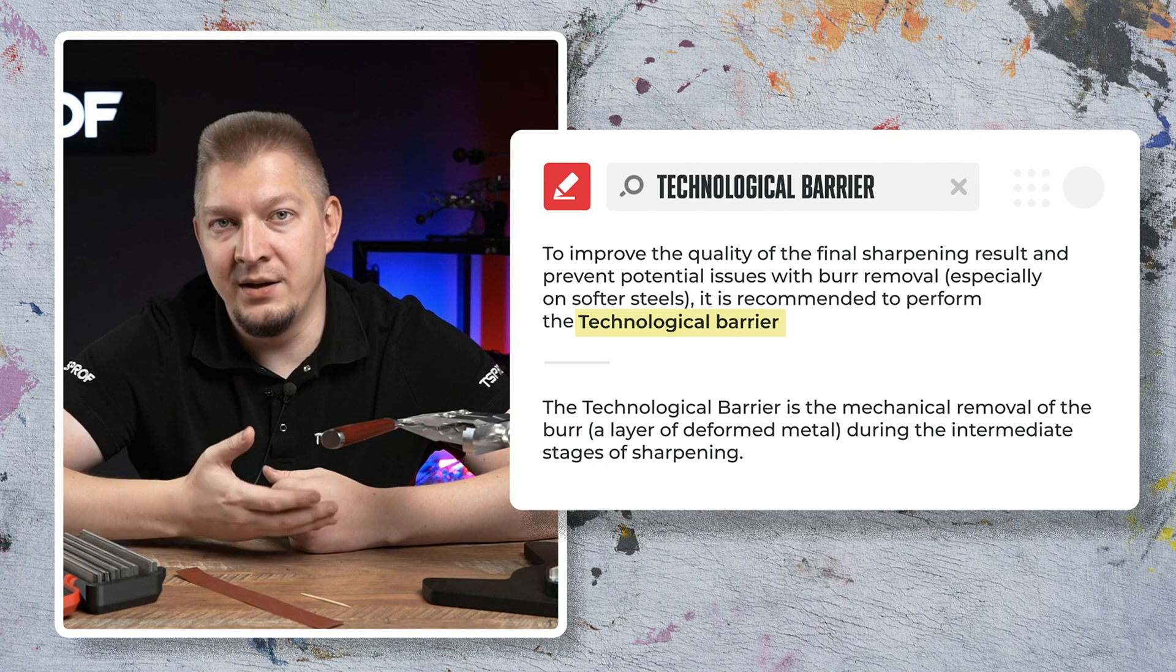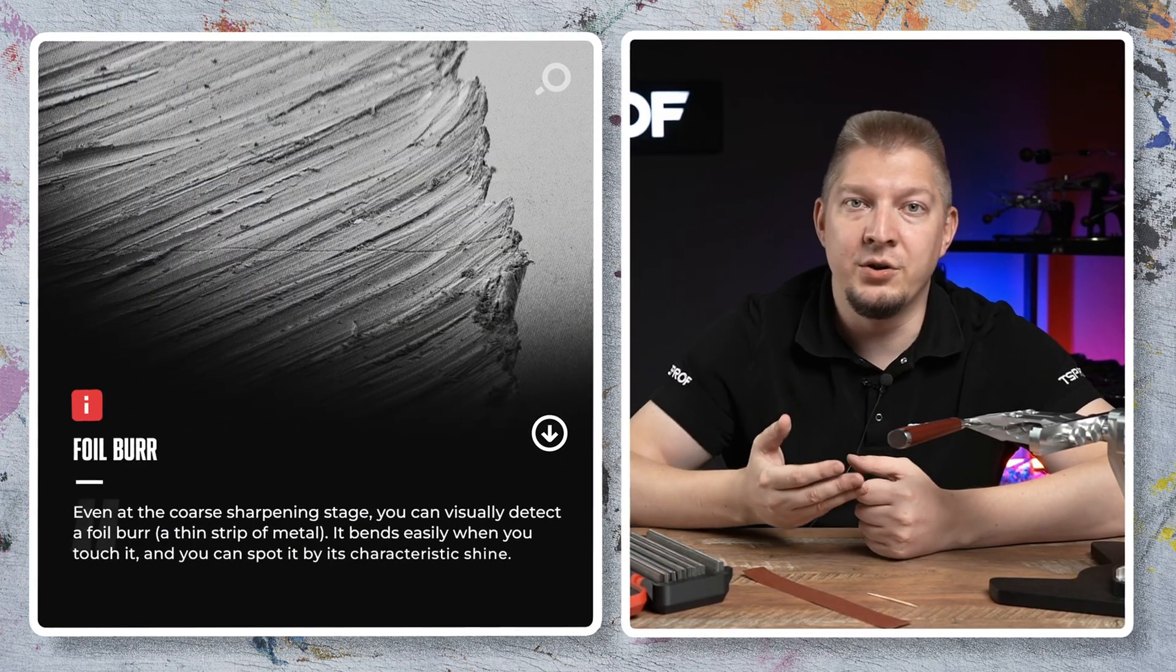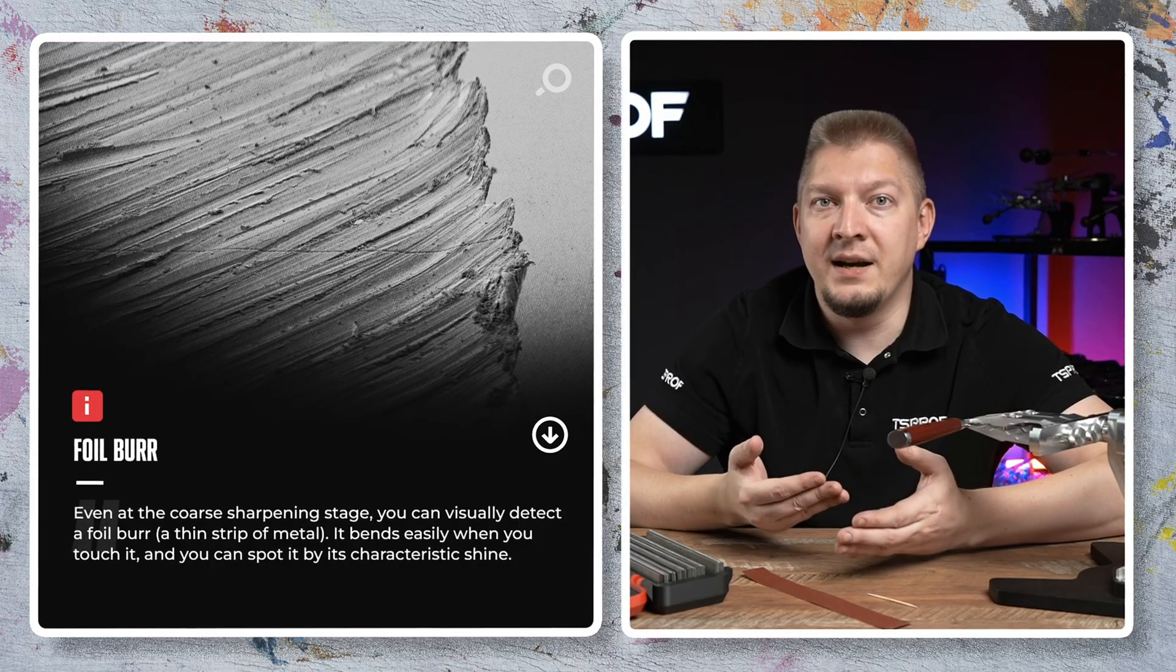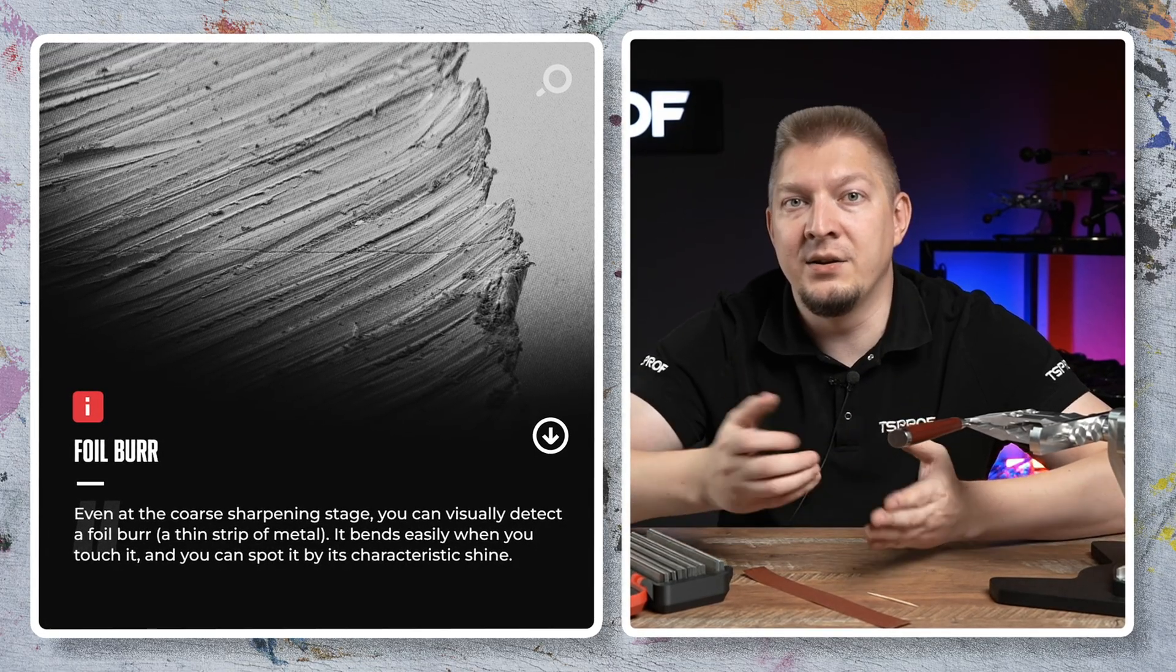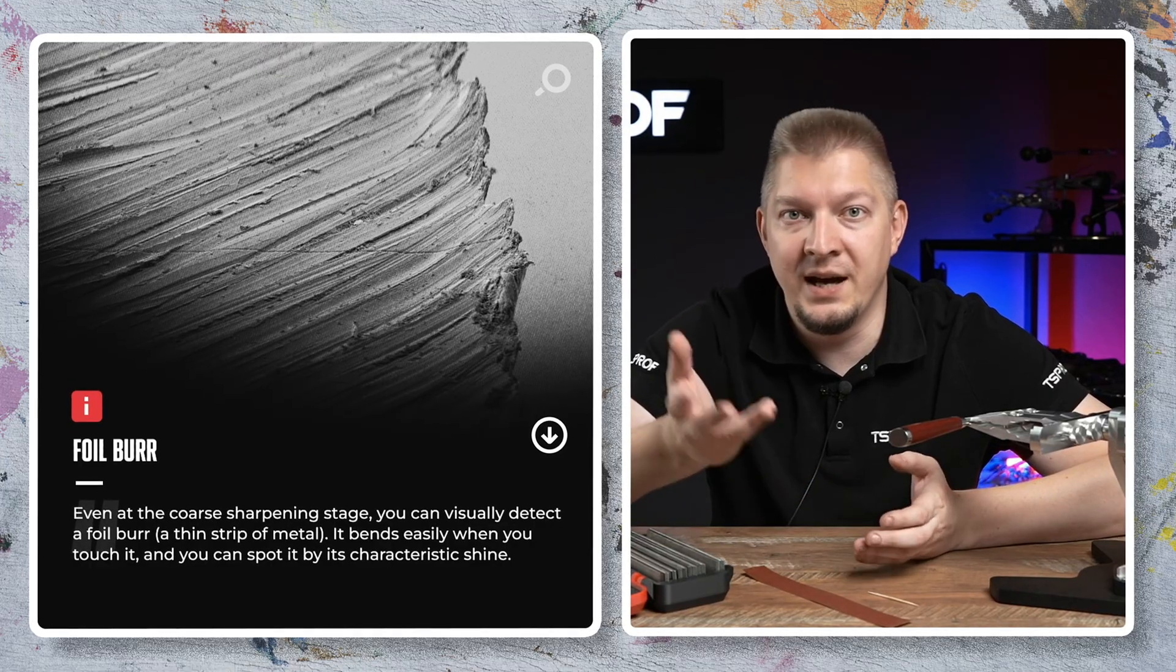It's when during sharpening we get a foil-like or wire-like burr. In other words, when we're working with the stone and the burr is so soft that it's like foil. That's why it's called a foil burr. It starts to bend in the other direction and you can just wiggle it back and forth with your finger.